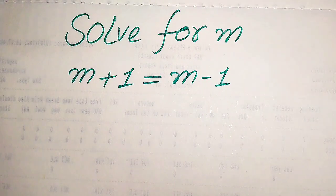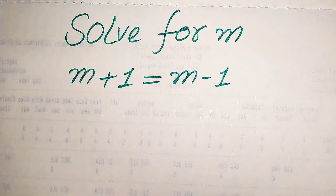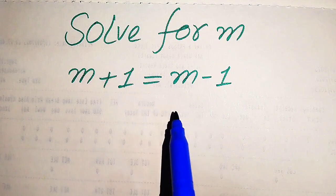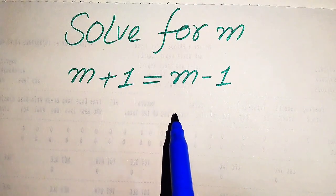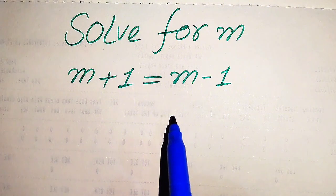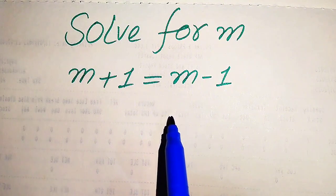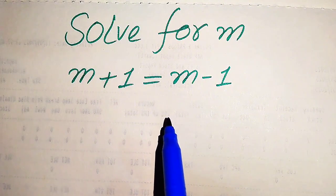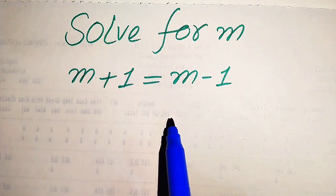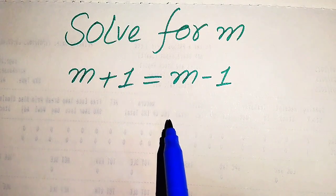Hello everyone. How to solve this problem for the values of m if we have √(m+1) = √(m-1) and we solve this problem for all the values of m. First we need to find all the roots of this equation, and at the last we will verify which of the roots are solutions and which of the roots are extraneous roots.